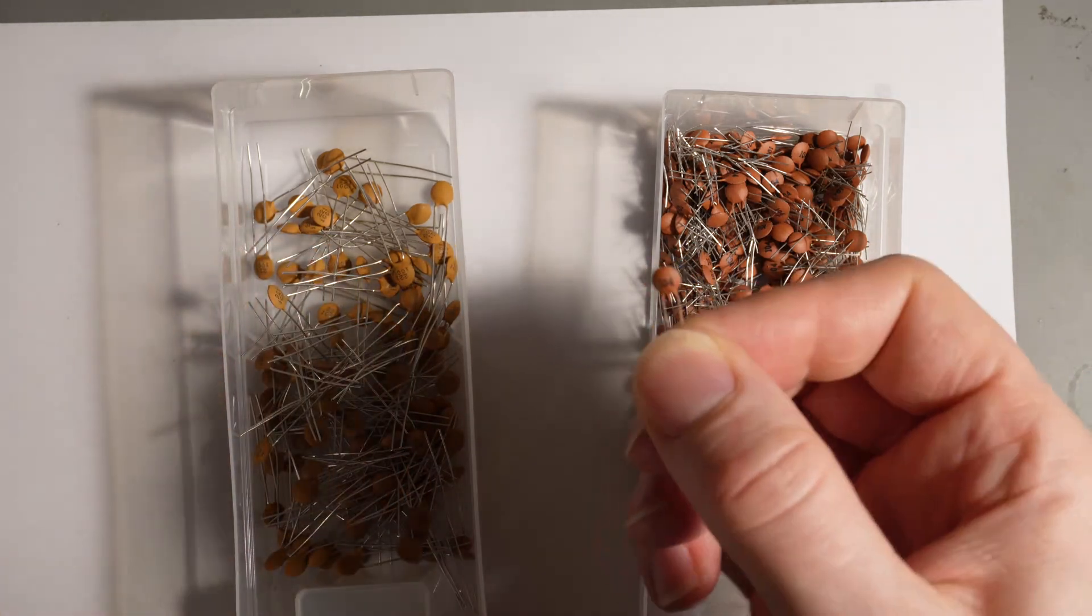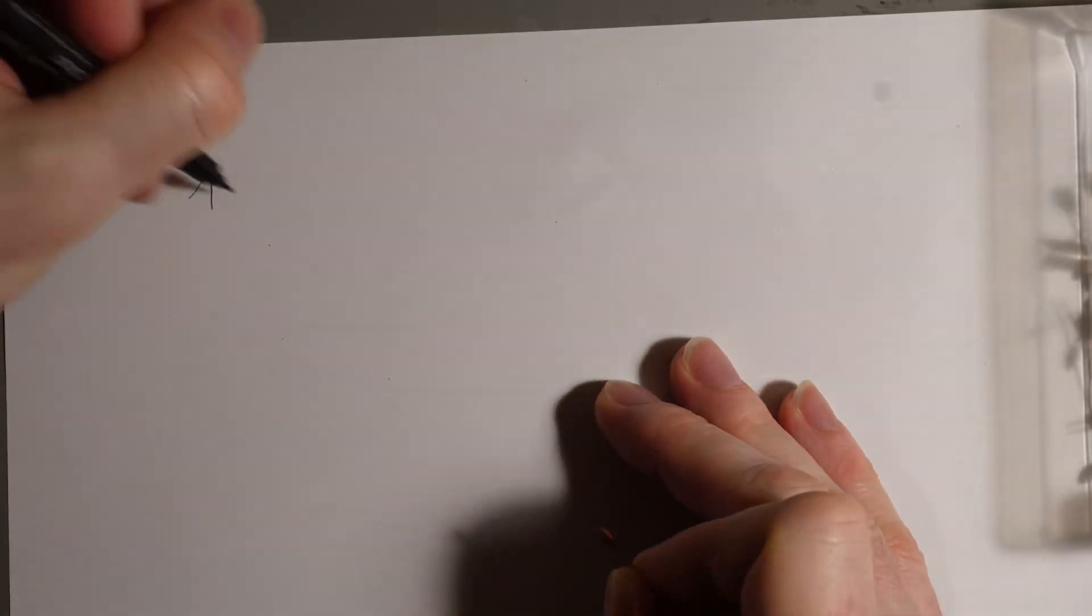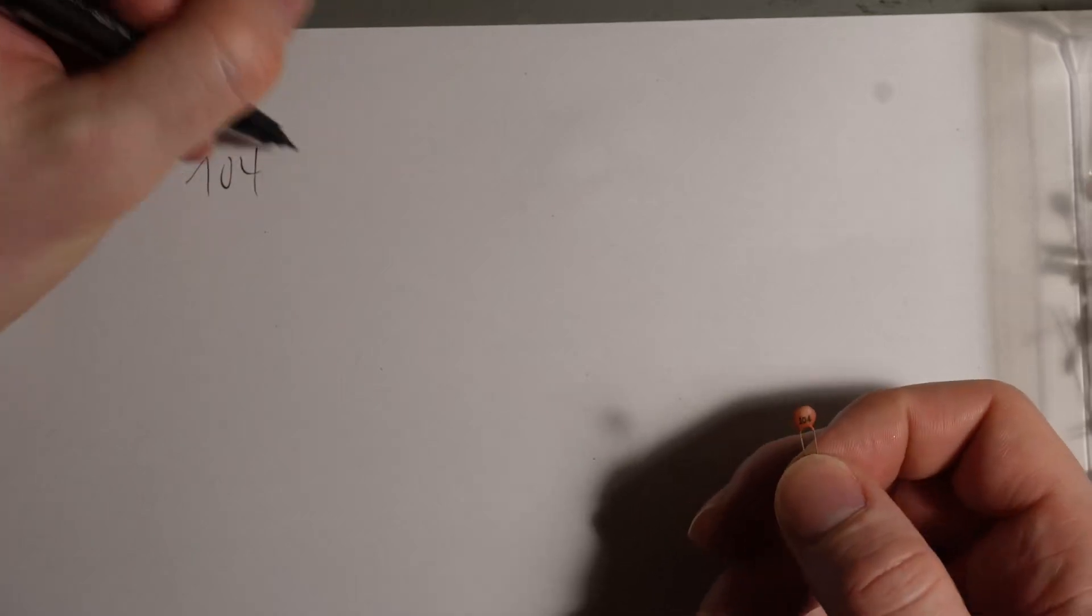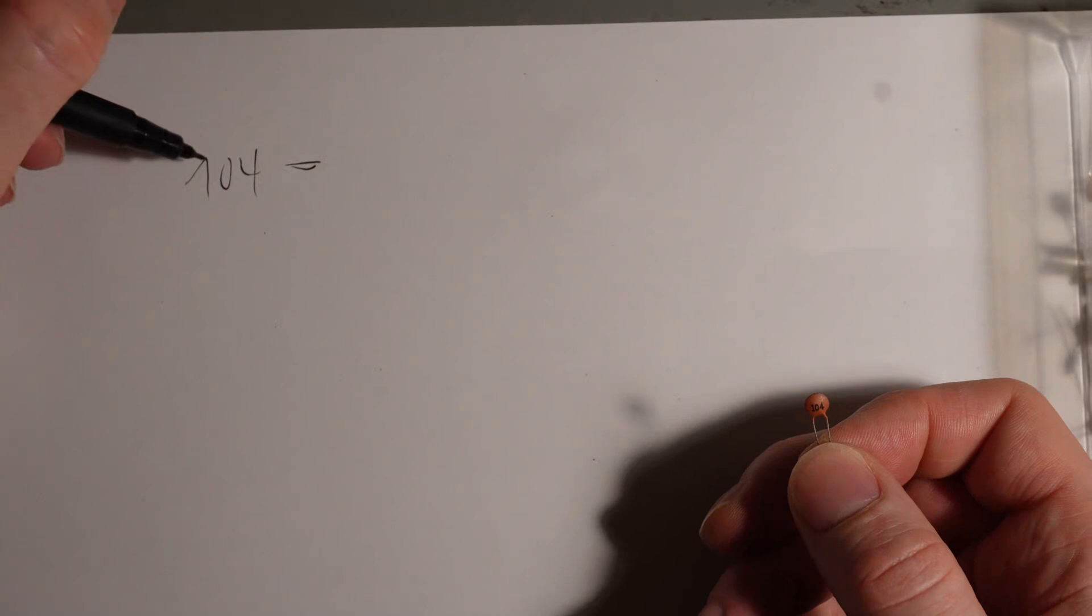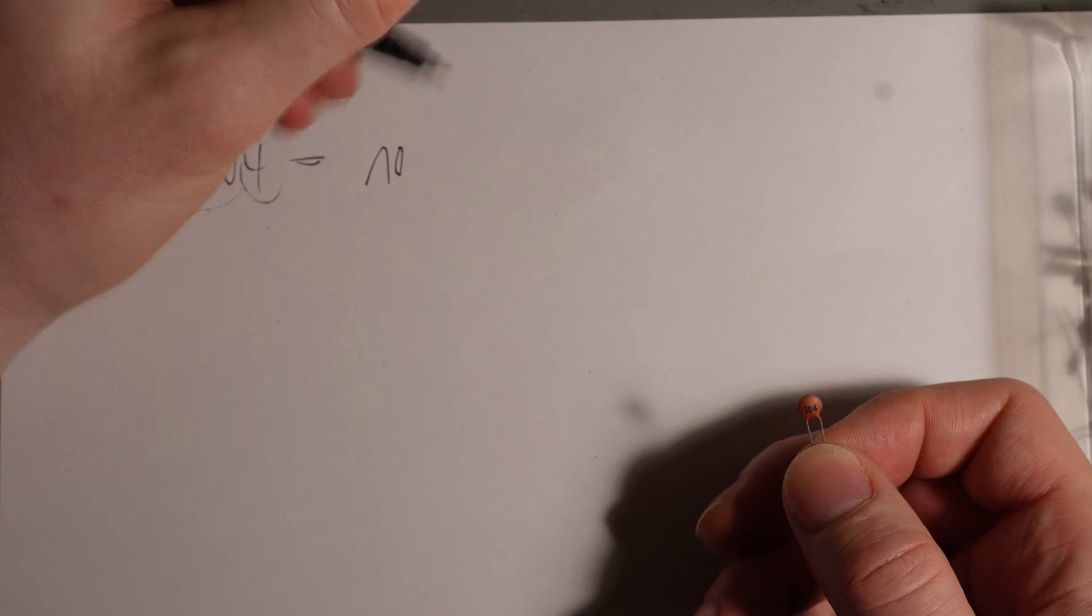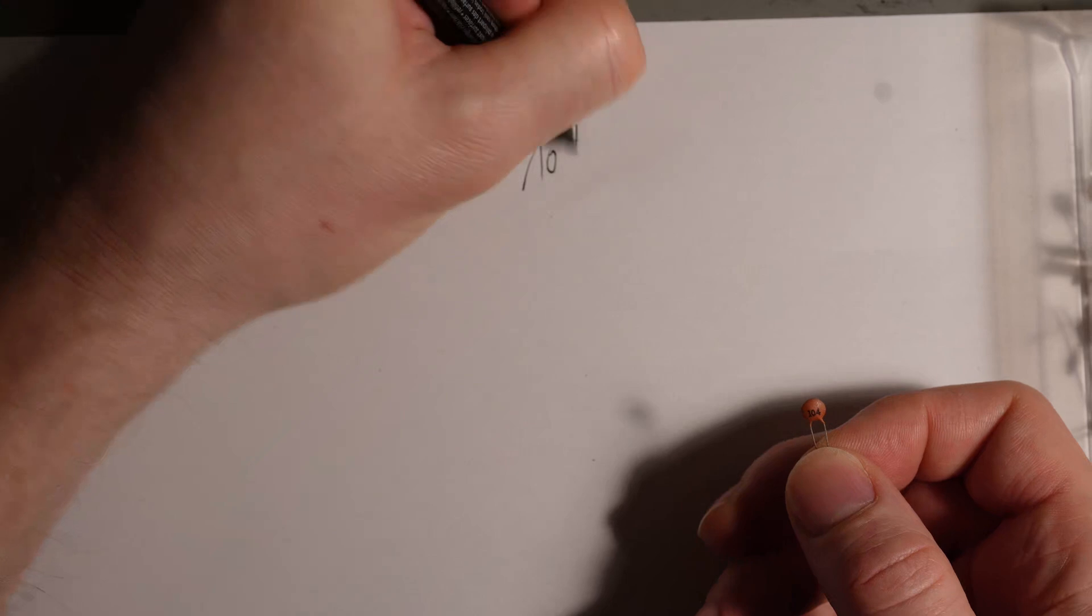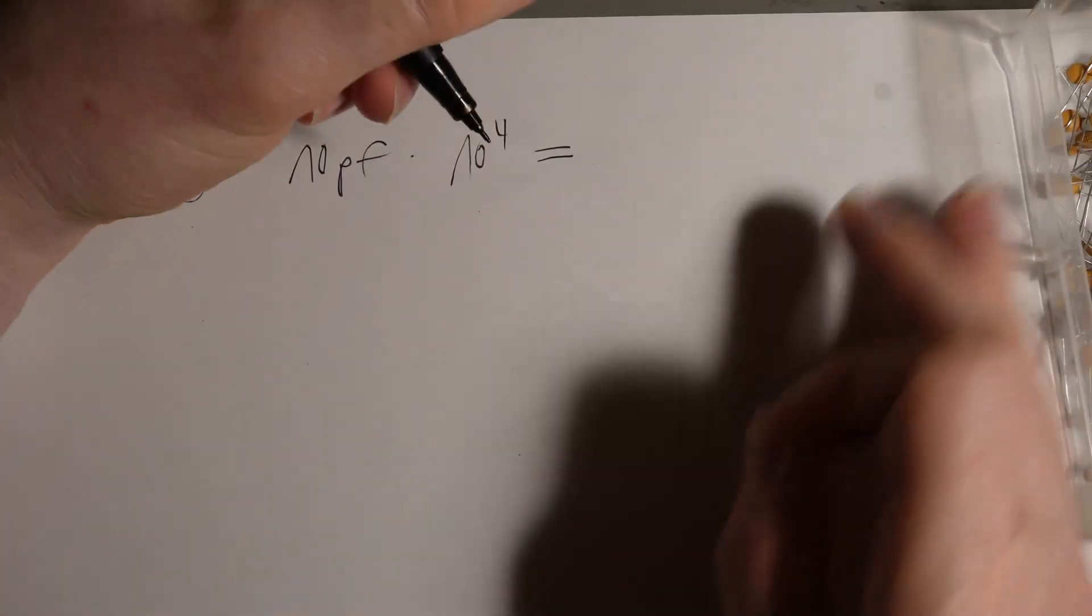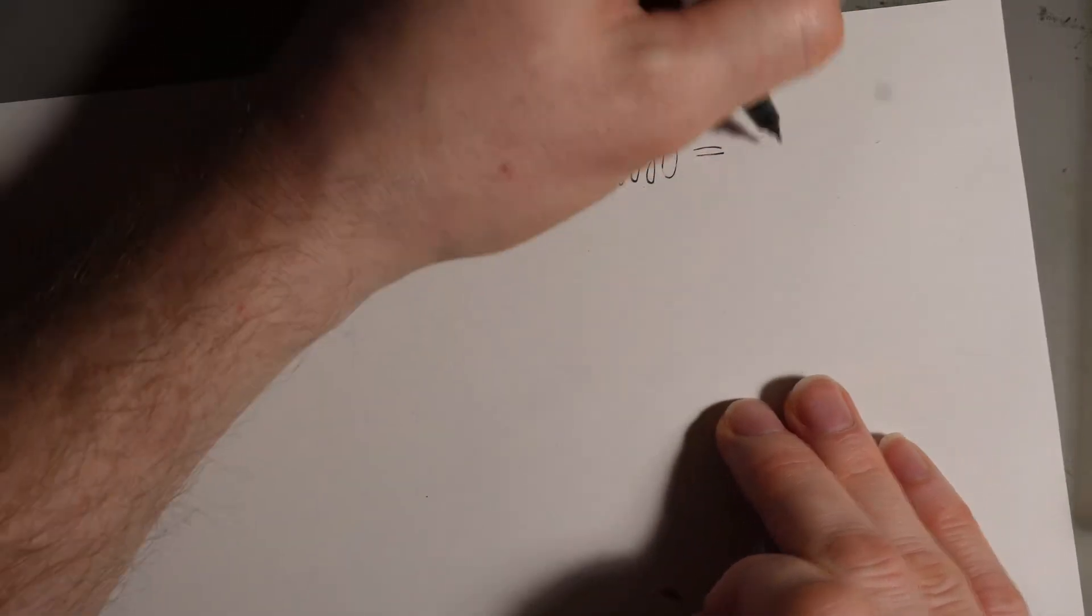For example on this one here there is a 104 noted. So let's talk a bit about the identifiers. This is the base here basically and this is the exponent. So this is 10 picofarads times 10 and the exponent is 4. So this would be equivalent. This is in picofarad and this would be 100 nanofarads here.